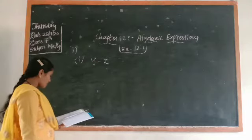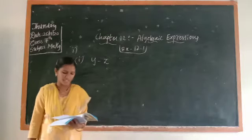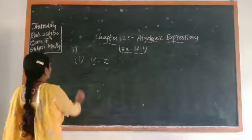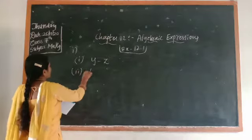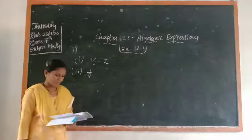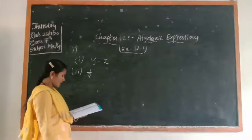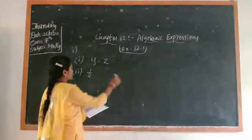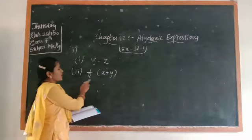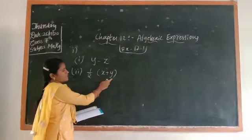Next, the second question: one-half of the sum of numbers x and y. One-half means one by two. Sum means addition, so sum of x and y means x plus y. You should write one by two, then in brackets x plus y: (1/2)(x + y).